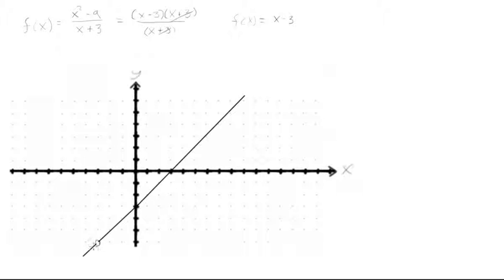So on this side, it could be like negative 3.111 or negative 3.0001 or something. And on this side, it could be negative 2.99999, just keep getting closer and closer, and it'll never touch when x equals negative 3.